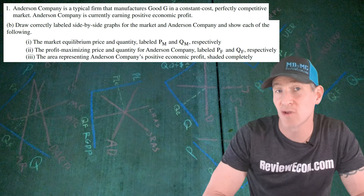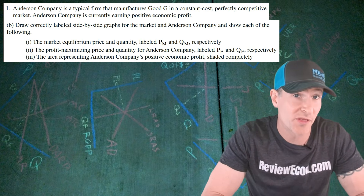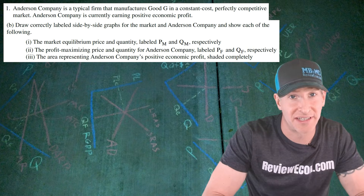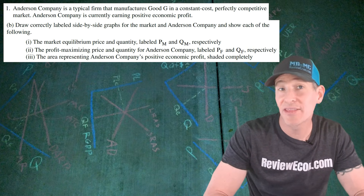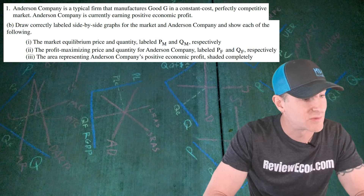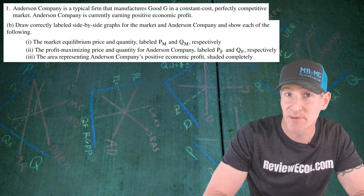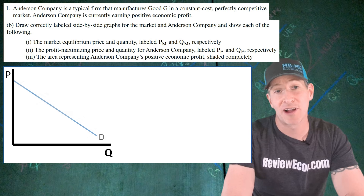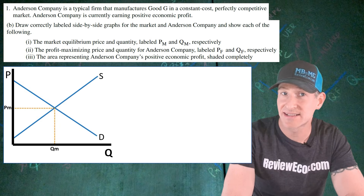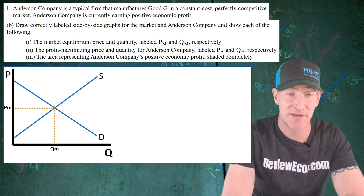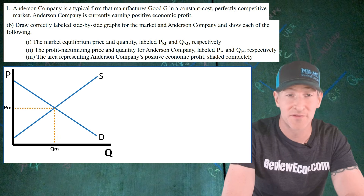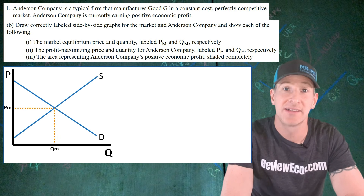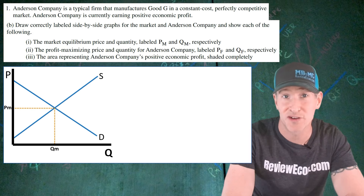For part B, we have to draw side-by-side graphs for both the perfectly competitive market for good G and a graph for the firm, Anderson Company. We have to show the equilibrium price and quantity and the firm's price and quantity, as well as have the company's economic profit shaded in completely. We're going to start off with our market graph. We have to label our axes — quantity on the x-axis and price on the y-axis. We have a downward sloping demand curve, upward sloping supply curve. Mark the equilibrium price PM and the equilibrium quantity QM. And that gives you your first point on this graph.